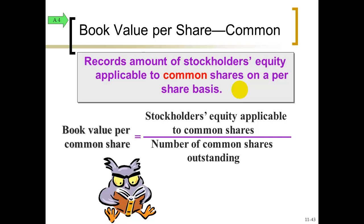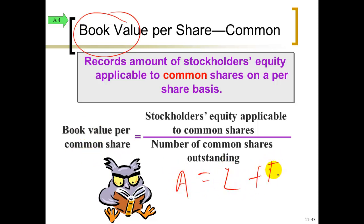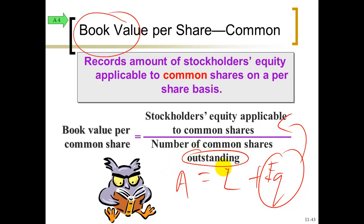One more ratio is book value per share. We've seen this term with fixed assets. The book value of one share of stock is total stockholders' equity divided by the number of shares outstanding. This represents the value of assets minus liabilities for one share of stock — in theory, if the company were to liquidate, this is what you'd receive per share, assuming assets are priced at current value. That's it for chapter 11. There's a lot of terminology, so use your chapter as a reference and work on your homework, learn smart, and the homework problems.